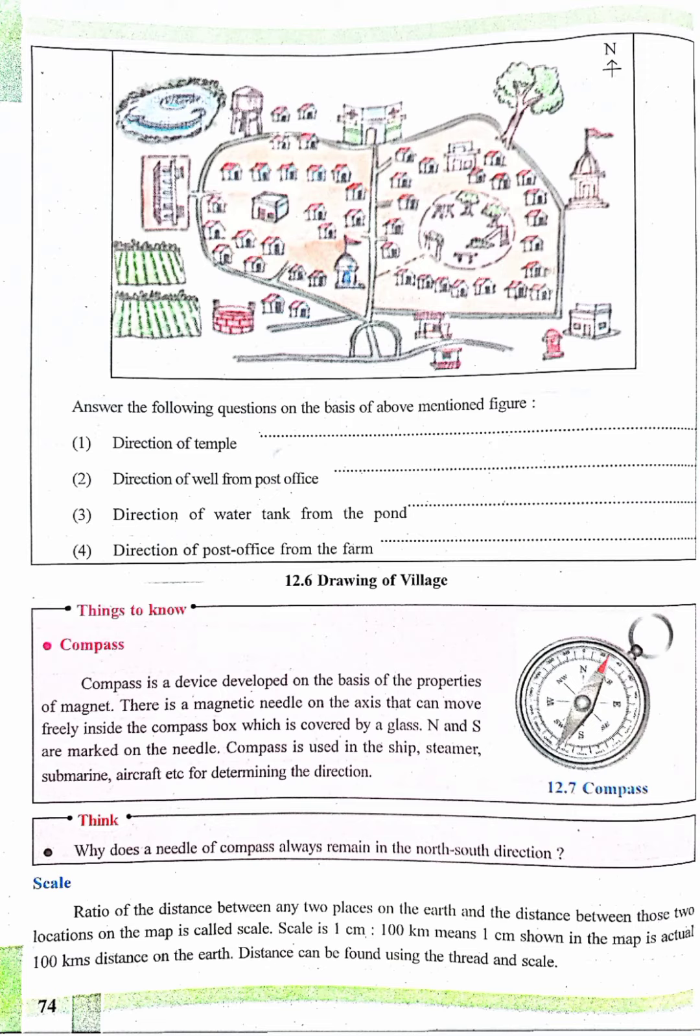Things to know: Compass. Compass is a device developed on the basis of the properties of magnet. There is a magnetic needle on the axis that can move freely inside the compass box which is covered by a glass.